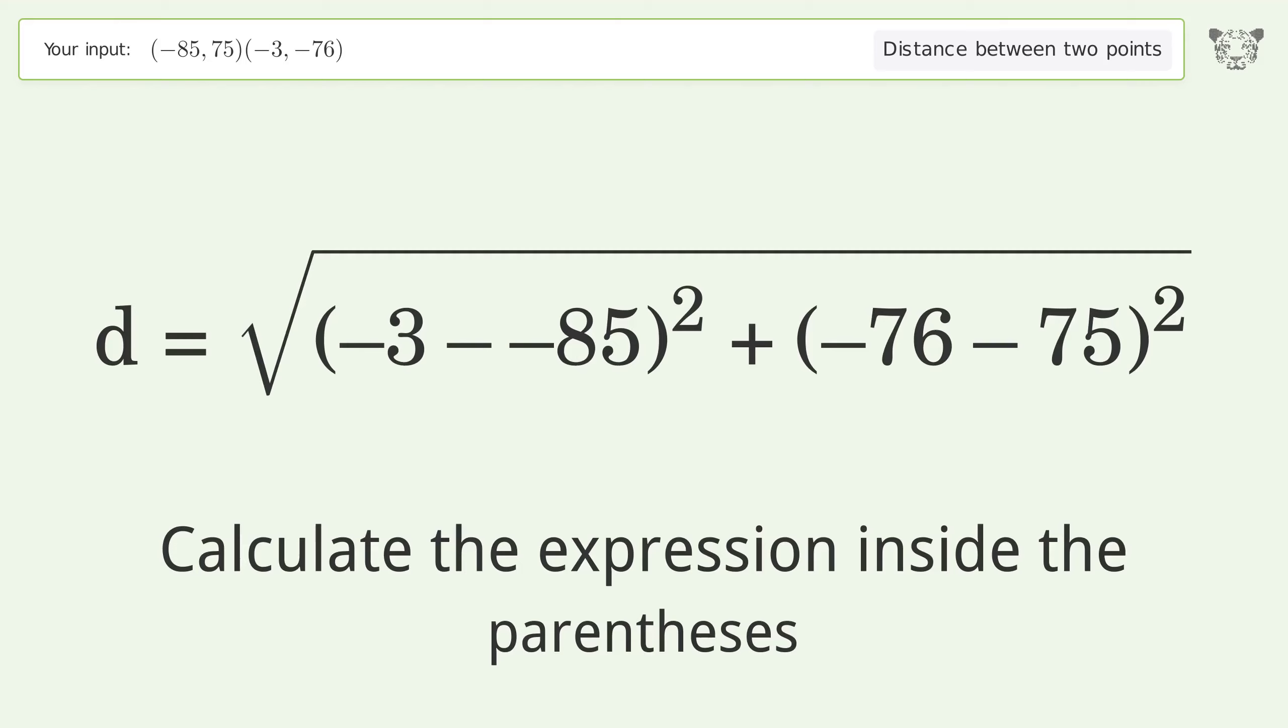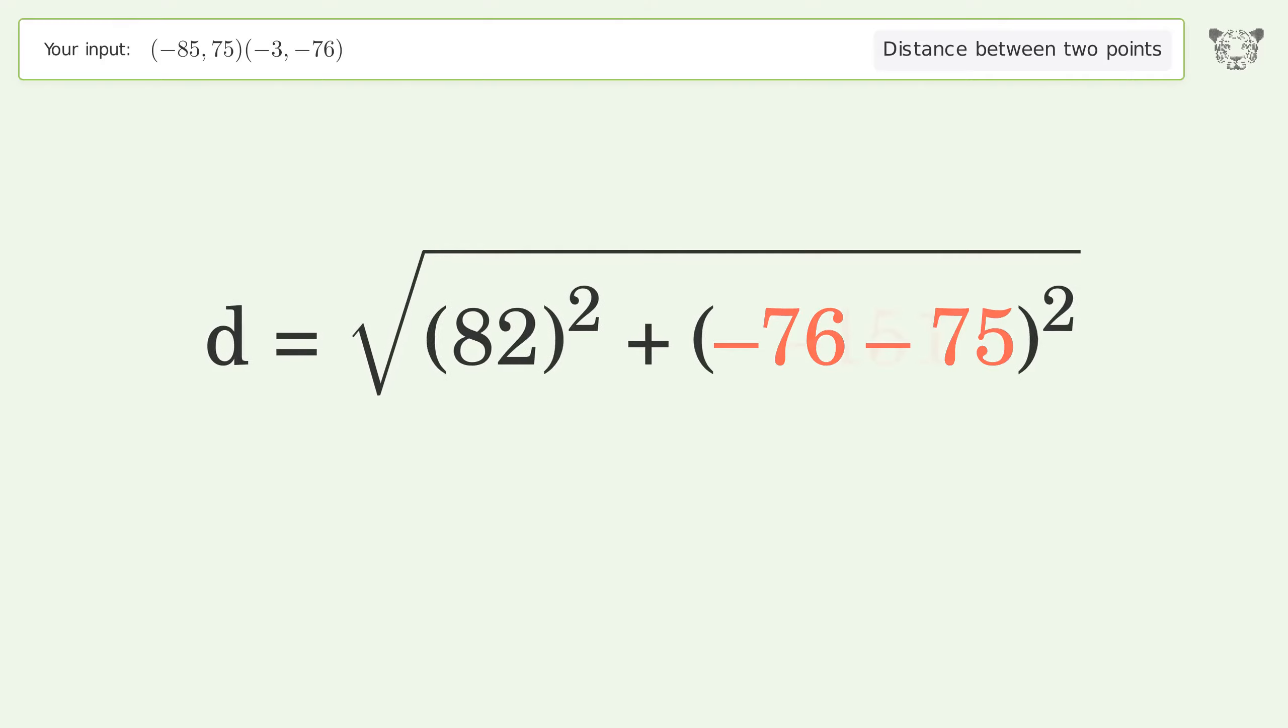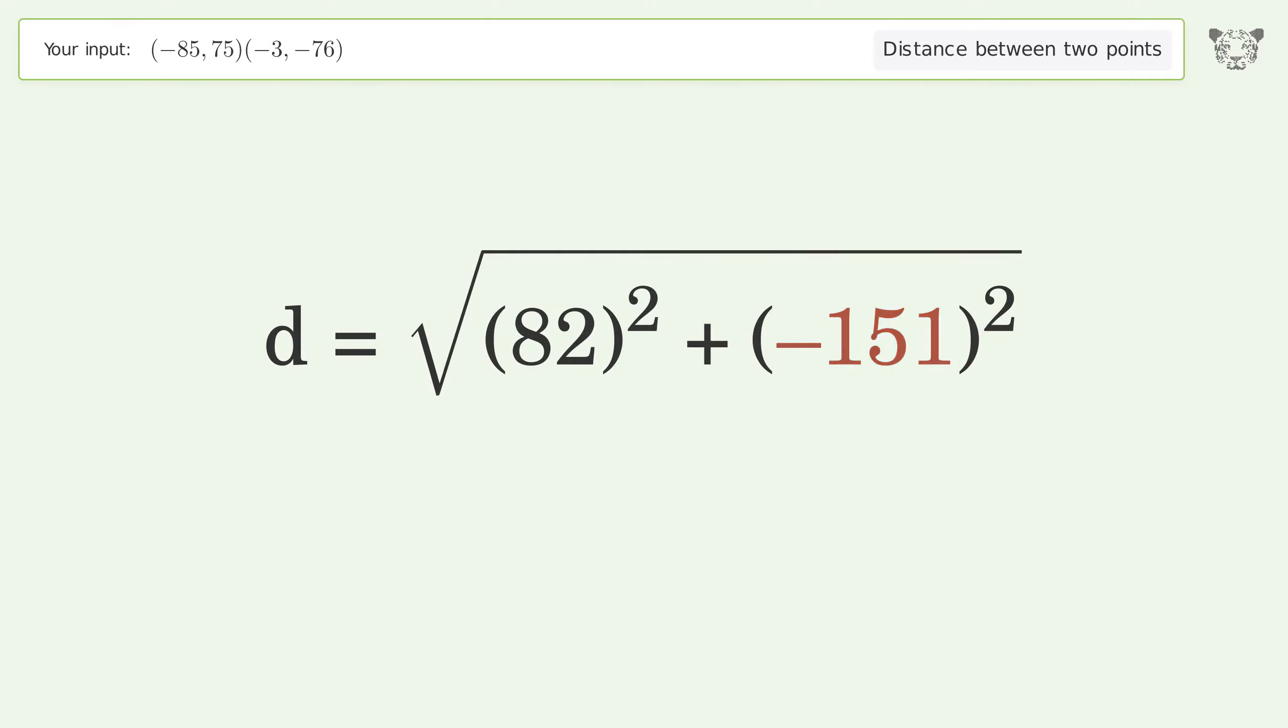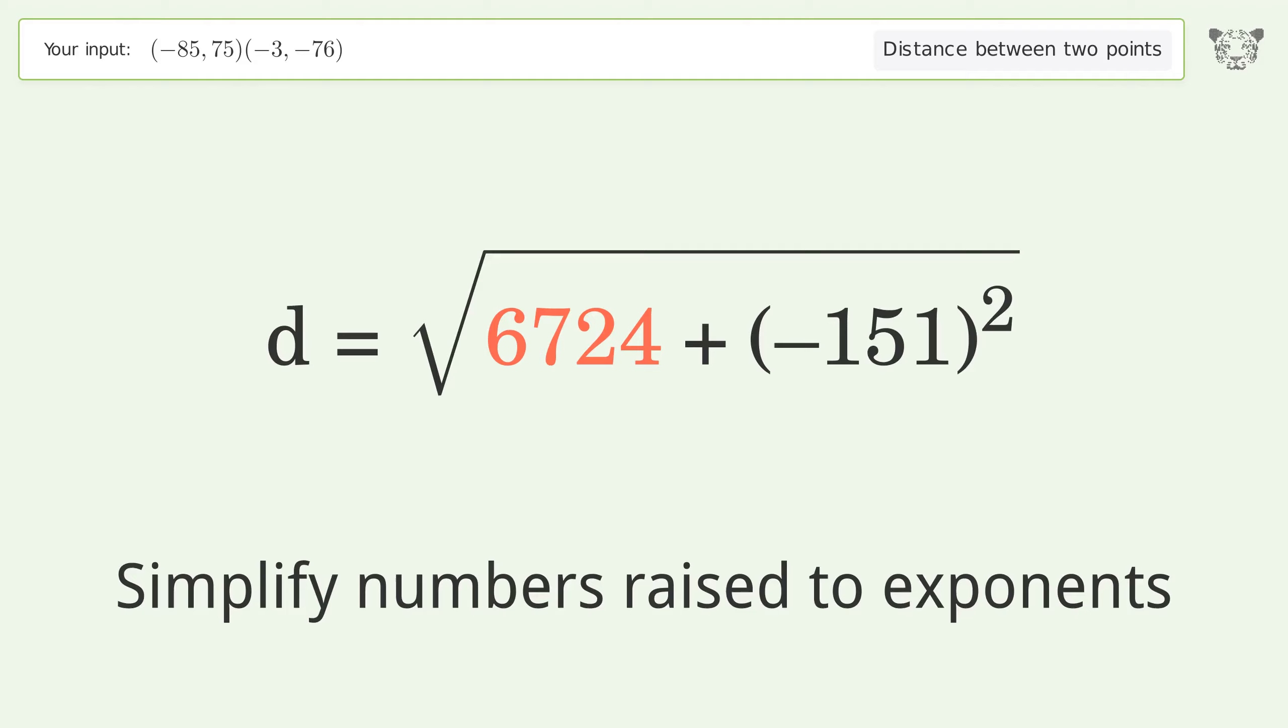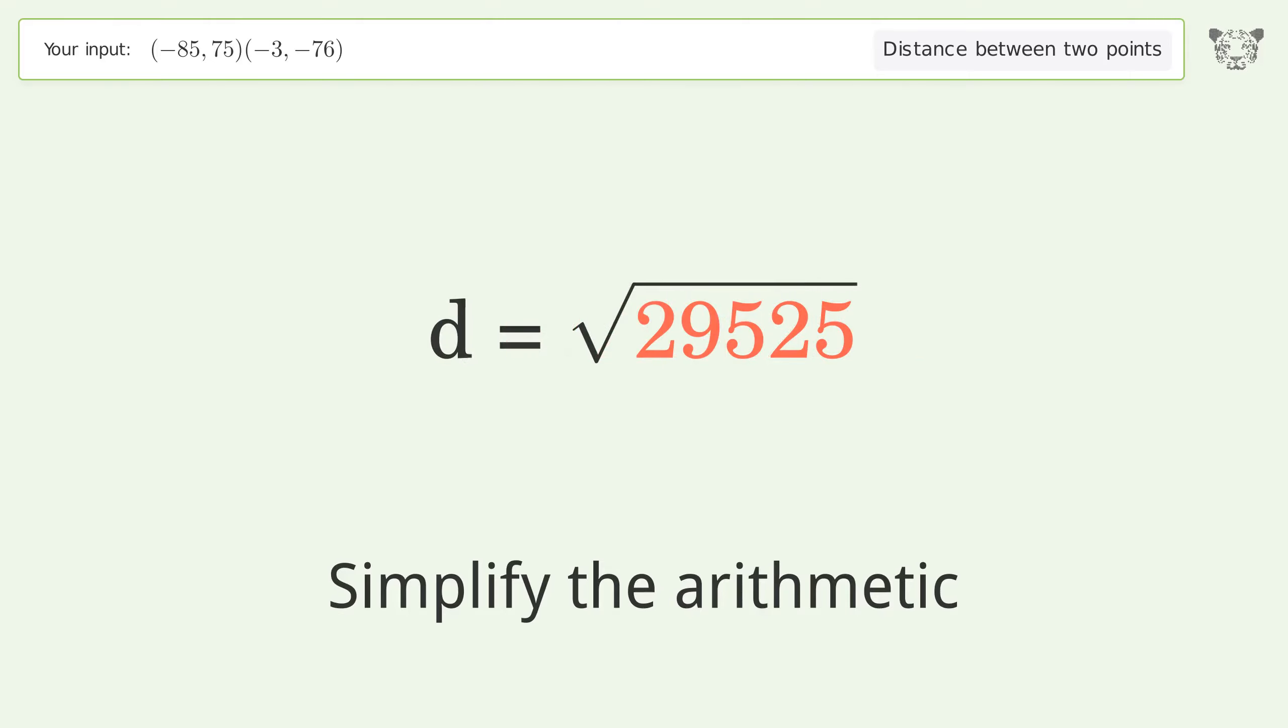Calculate the expression inside the parentheses, simplify numbers raised to exponents, and simplify the arithmetic. The distance between the two points is the square root of 29,525, or 171.828.